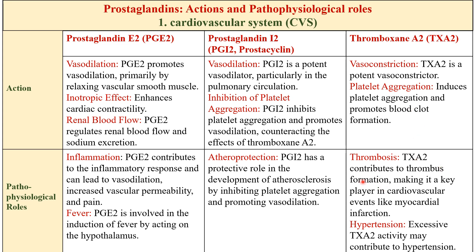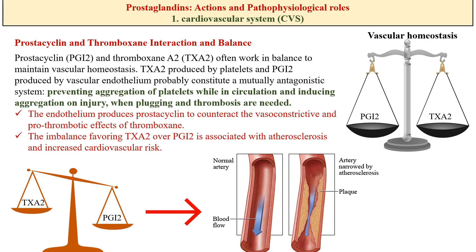Thromboxane A2 contributes to thrombus formation, making it a key player in cardiovascular events like myocardial infarction. Excessive thromboxane A2 activity may also lead to hypertension. Prostacyclin and thromboxane work in balance to maintain vascular hemostasis — the body's way of maintaining blood vessel integrity, preventing excess bleeding or clotting through a delicate balance between pro-clotting and anti-clotting factors.